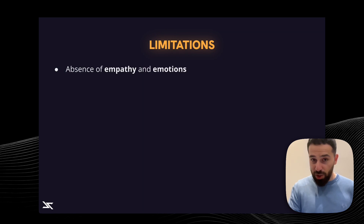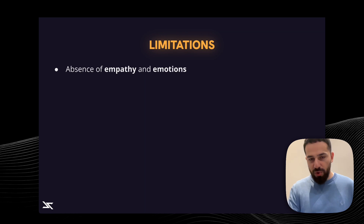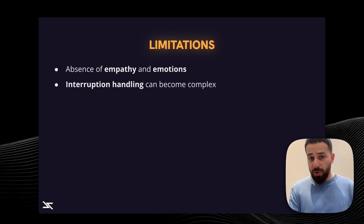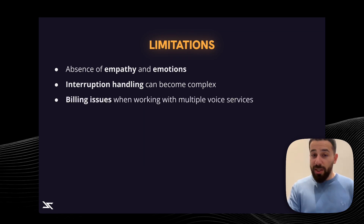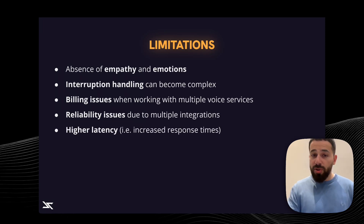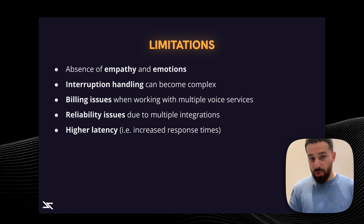Obviously, this has a few limitations. One limitation is the absence of empathy and emotions, because from the moment you transcribe voice into text, you lose the intonation, the pace, the emotions. Interruption handling can become complex because of the steps the AI needs to go through in this orchestration. There are also billing issues because three different AIs are operating and costs can vary. Same thing with reliability — using different AIs in the chain can make it less reliable, as it's multiple integrations. And lastly, the latency is higher, meaning increased response times.